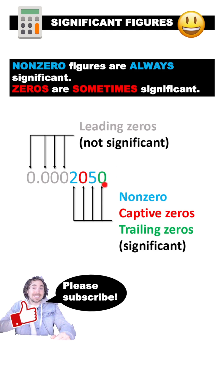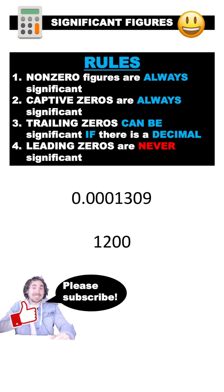Trailing zeros are sometimes significant, but sometimes are not significant. I'll show you that in a minute.